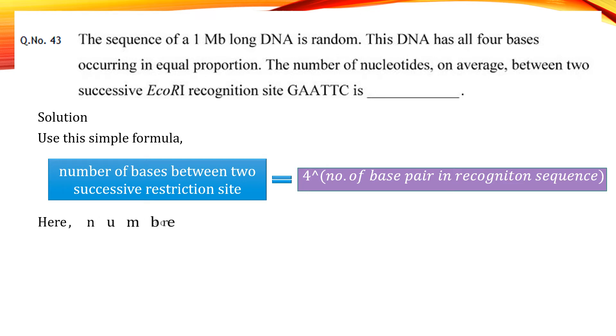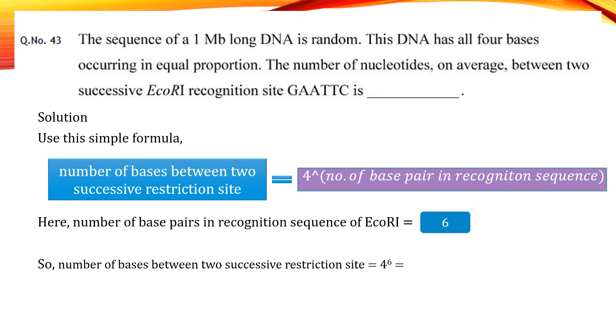For EcoRI, the number of base pairs in its recognition sequence is 6. Putting this value in the given formula, we will get 4096 as our answer.